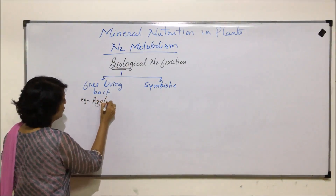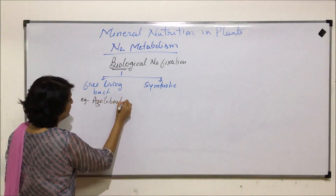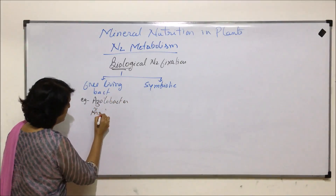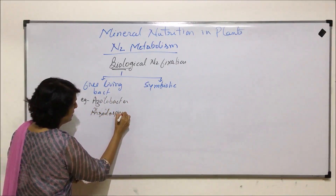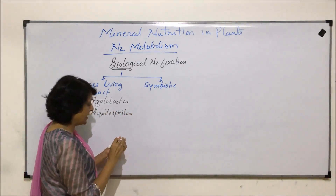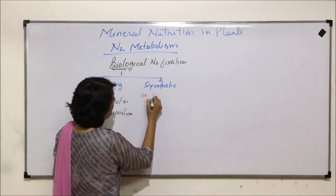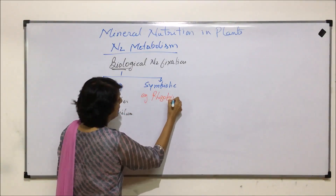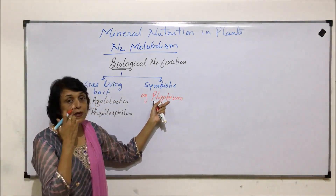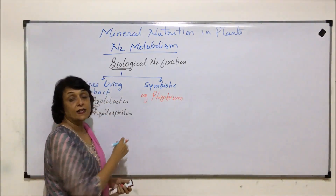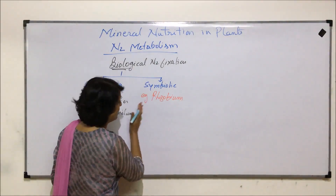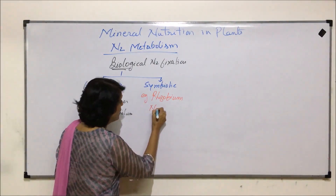In the category of free-living bacteria, we take the examples of Azotobacter and Rhodospirillum. In the case of symbiotic bacteria, we take the example of Rhizobium, which is symbiotic with leguminous plants. There are also certain cyanobacteria which help in nitrogen fixation.